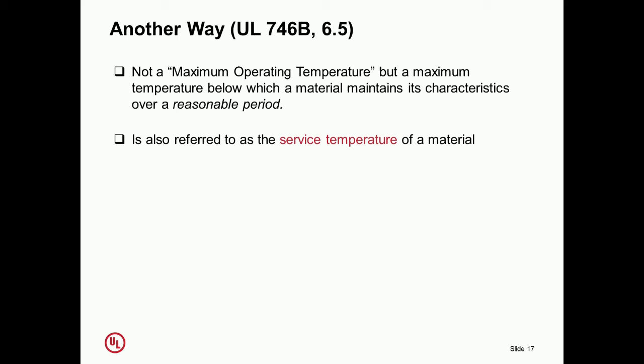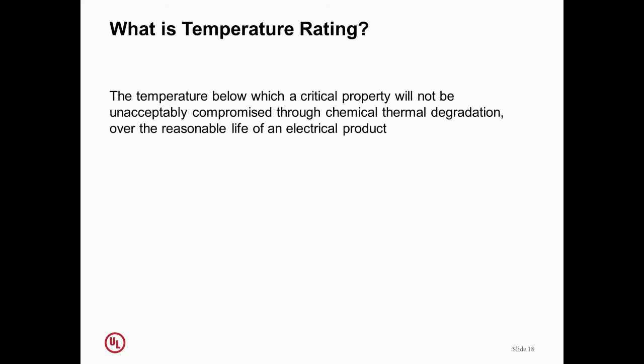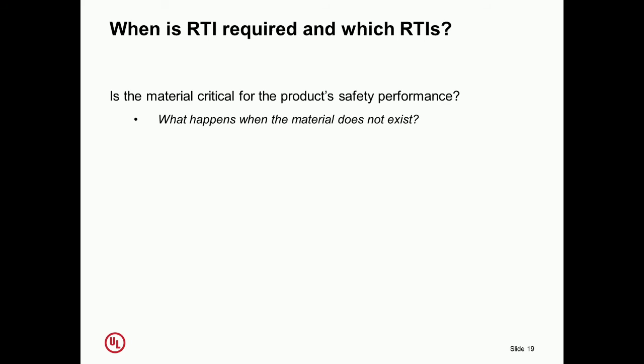Thermal endurance is one of the most relied upon tests for polymer materials. It's not a maximum operating temperature, it's simply a realistic service temperature at best. A temperature rating is defined here for our discussion and for the relative thermal index as the temperature below which a critical property will not be unacceptably compromised through chemical thermal degradation over the reasonable life of an electrical product. Here's another gap: what is a reasonable lifetime of an electrical product? As we heard in the last presentation, PV modules are regularly warranted at 25 years lifetime, sometimes up to 40 years. Is that different from your iPad or cell phone? Absolutely. How do we evaluate those materials and correlate the values of a thermal index to real lifetime? There's no solution to that yet. That's one of the limitations we have.